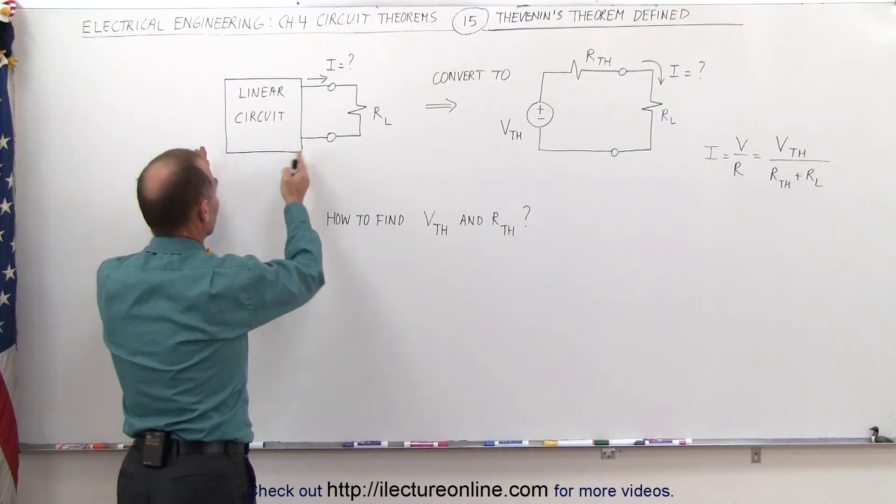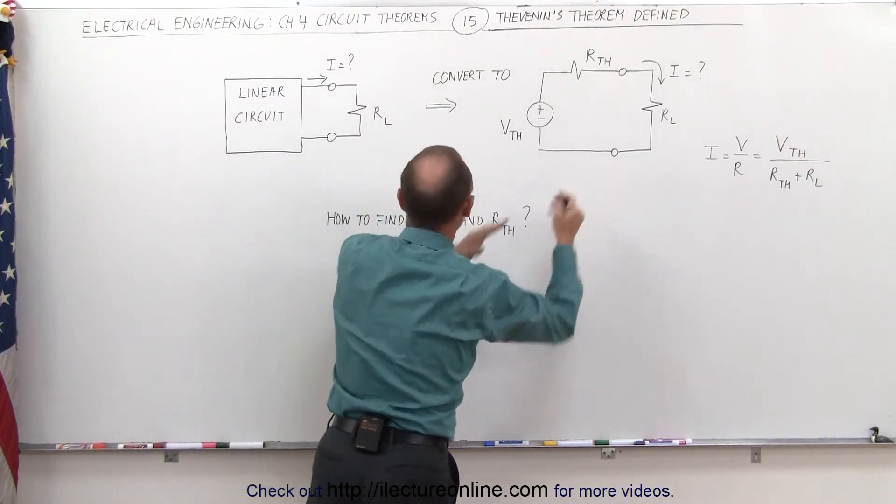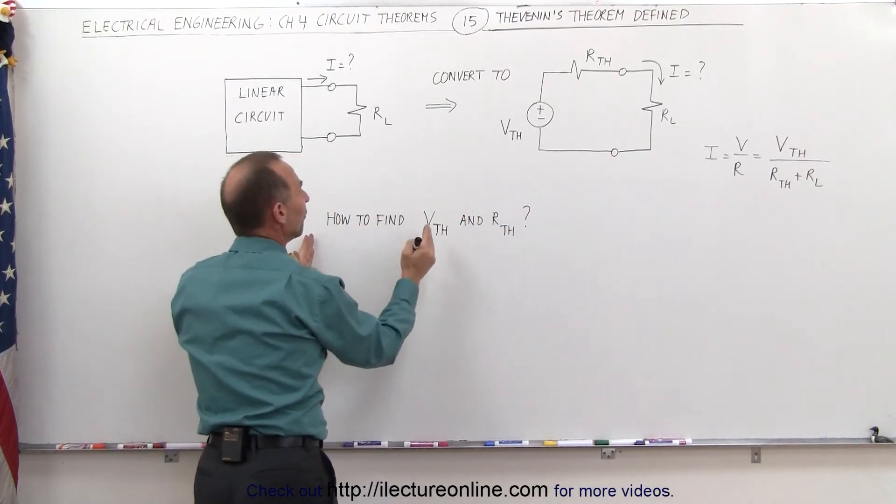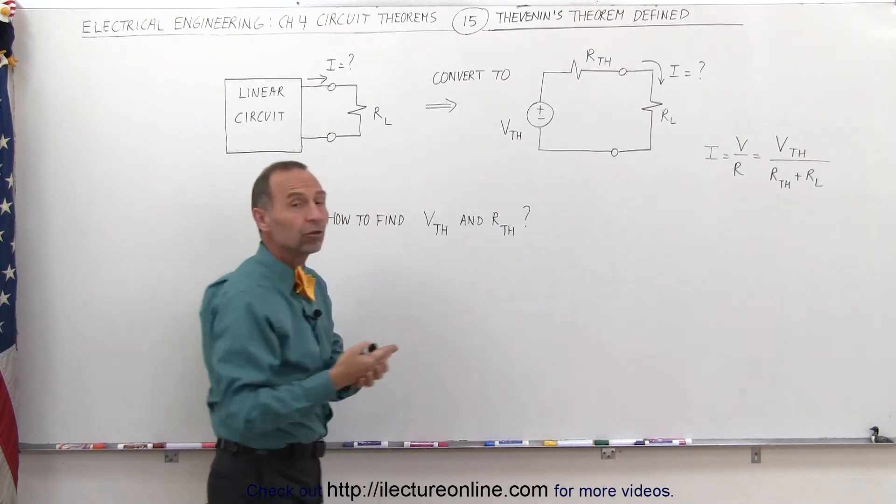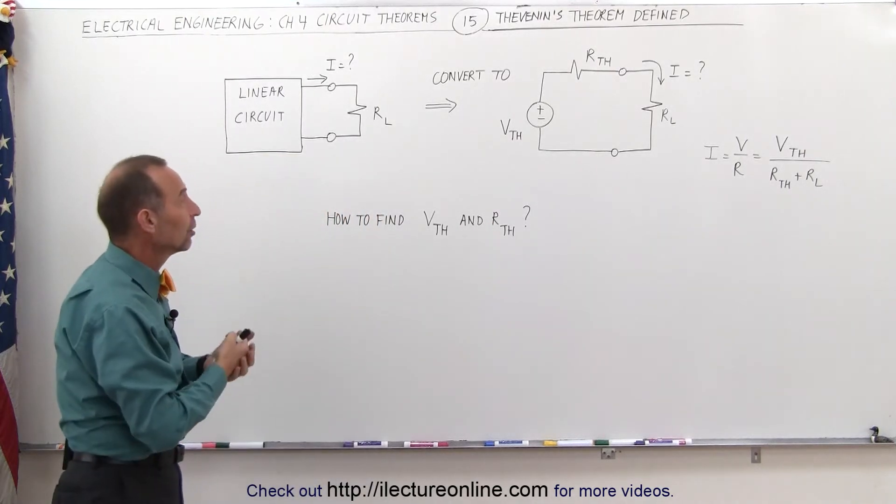But how do we turn a linear circuit into a Thevenin circuit? In other words, how do we find V Thevenin and R Thevenin? The voltage, the Thevenin's voltage and the Thevenin's resistance.